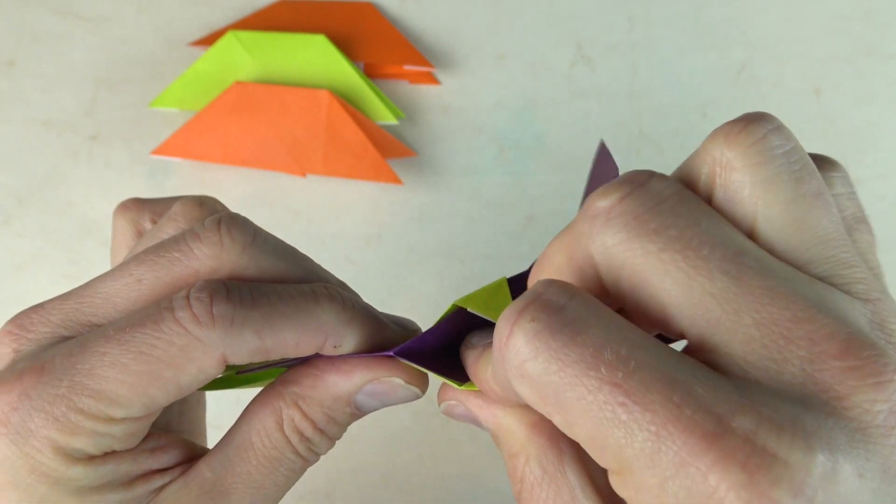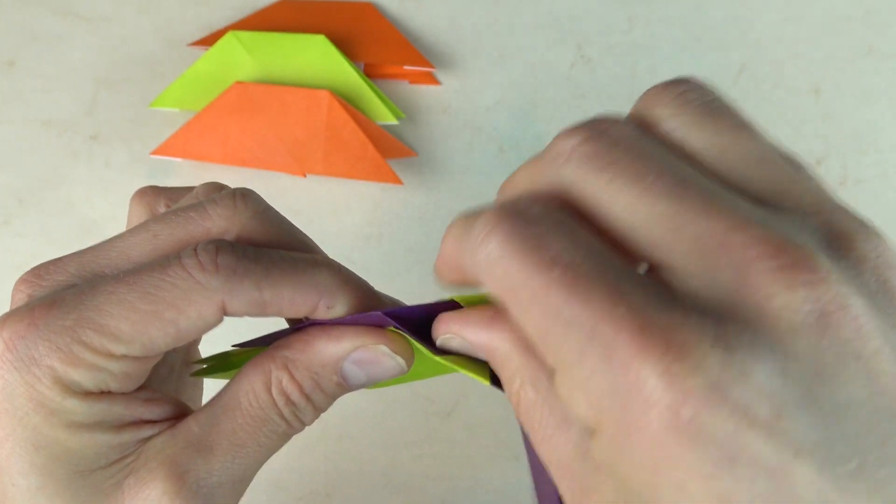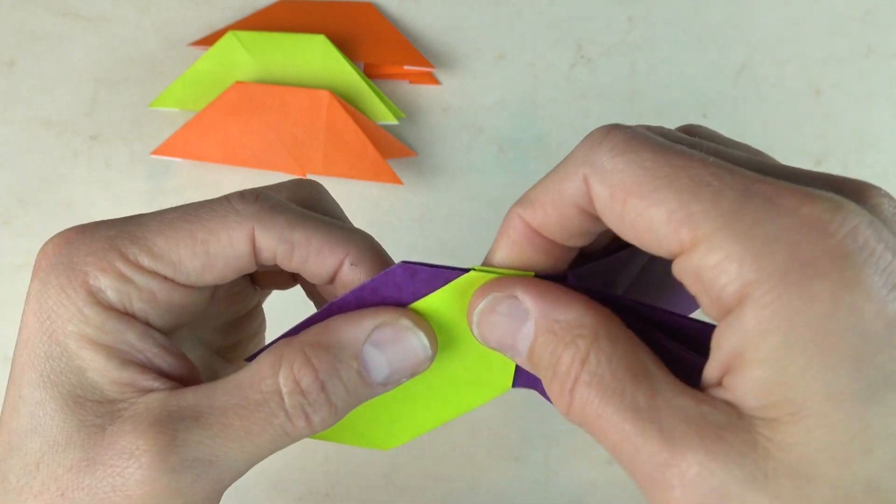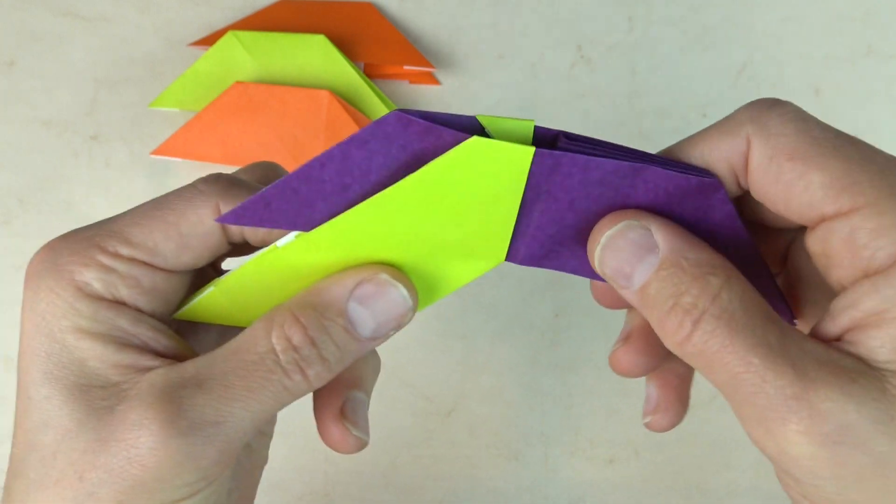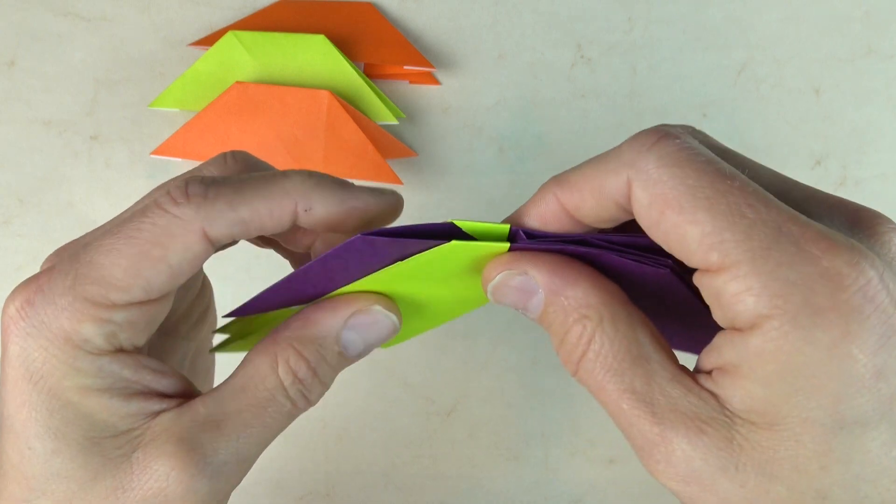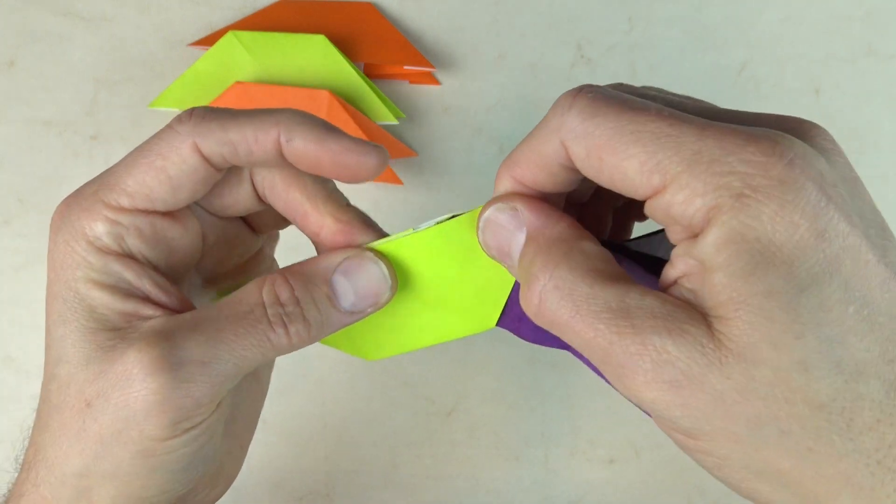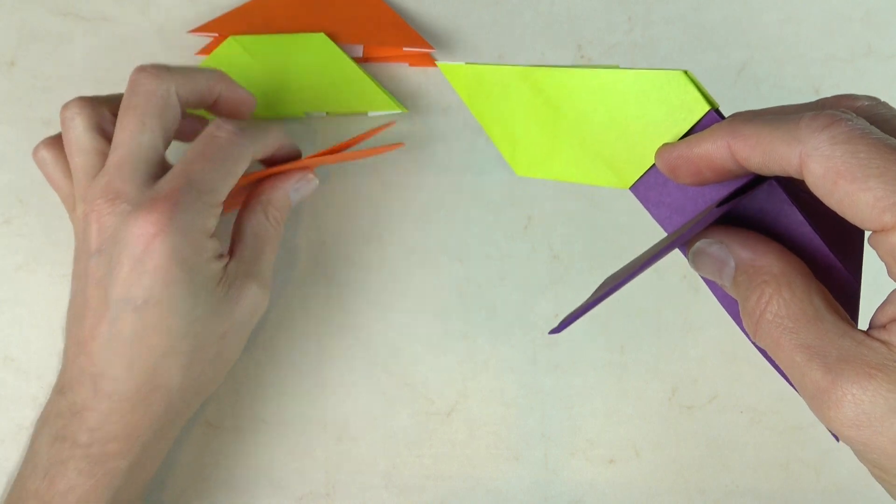If it doesn't slide easily, then you'll have to loosen it by sliding it up just a little bit. Make sure that it slides easily. Okay. And slide it over. And now we're going to repeat.